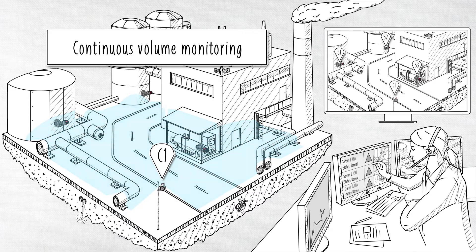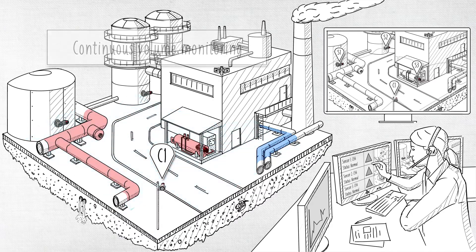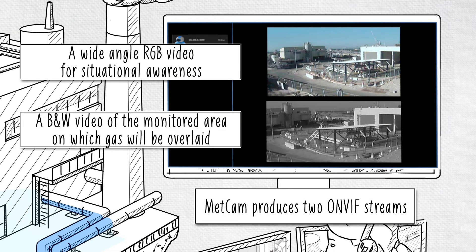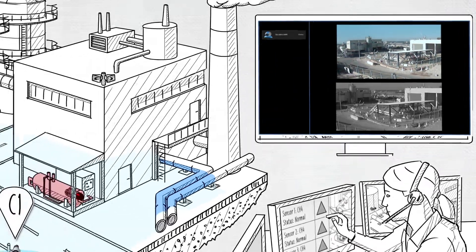It includes onboard 4-20mA output for integration into safety networks. METCAM outputs two separate video streams that interface any ONVIF-compliant video management system.